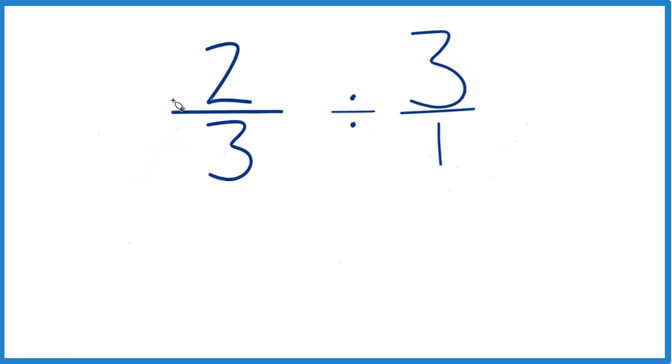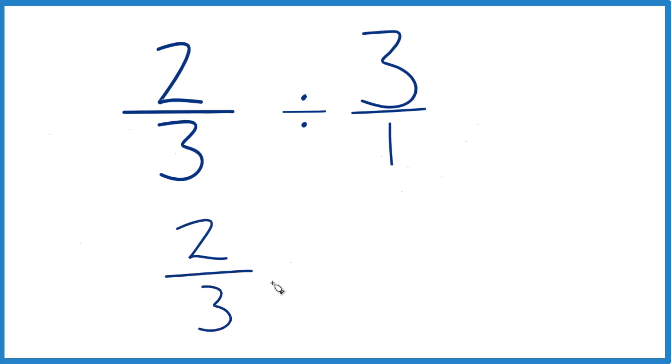So next, when we're dividing fractions like this, we can take the two-thirds here, and instead of division, we can multiply. We're going to multiply by the reciprocal of three over one. Take the denominator, move it to the top, numerator goes to the bottom. So we have one over three. That's just one-third.